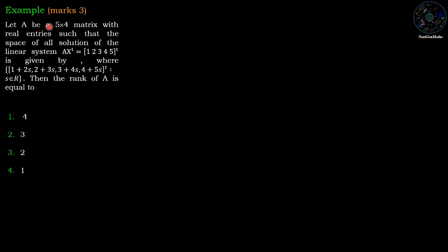Example: Let A be a 5 cross 4 matrix with real entries such that the space of all solutions of the linear system AX transpose is equal to [1, 2, 3, 4, 5] transpose is given by the set {[1 + 2S, 2 + 3S, 3 + 4S, 4 + 5S] transpose, S belongs to R}. Then the rank of A is equal to: Option 1 is 4, option 2 is 3, option 3 is 2, and option 4 is 1.